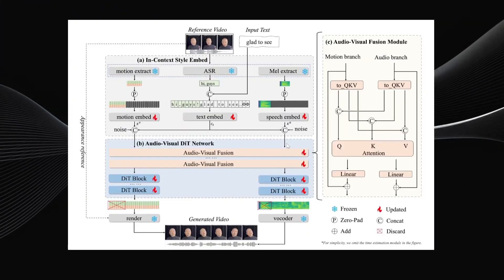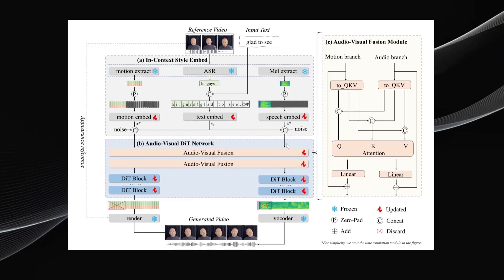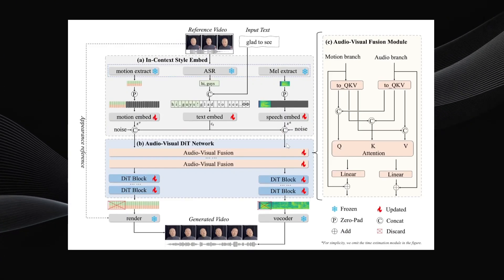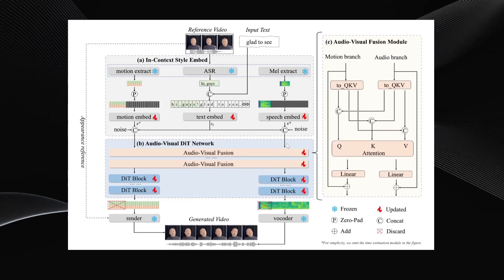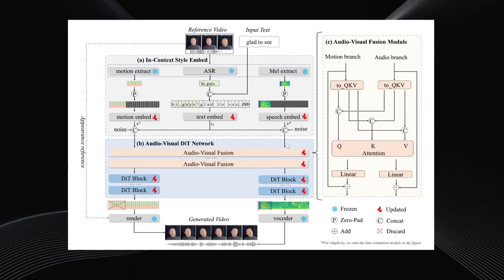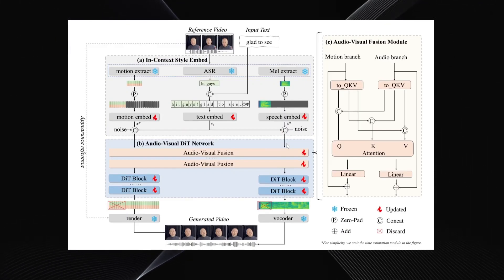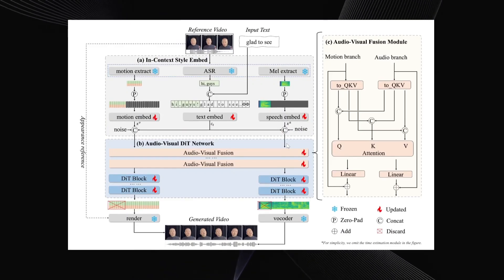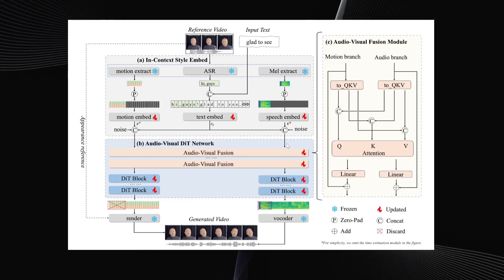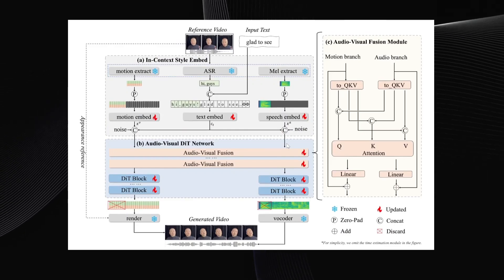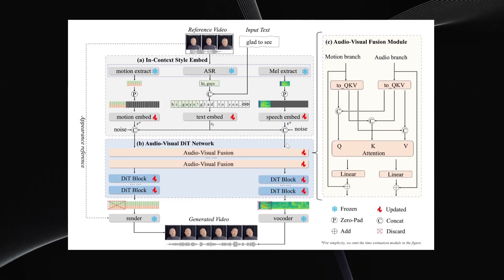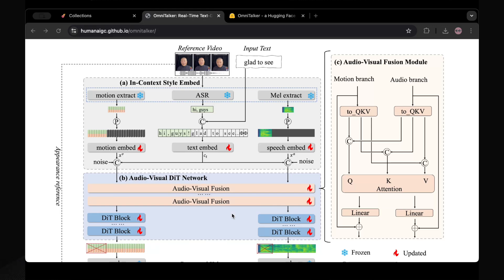So how does this magic happen? Under the hood, OmniTalker uses what's called a dual-branch diffusion transformer architecture. In simpler terms, it has two main parts working together: one part focuses on generating the video frames — the visuals — and the other part focuses on generating the corresponding audio, the speech. These two systems collaborate closely to ensure the lip movements perfectly synchronize with the generated audio, creating the final seamless output.